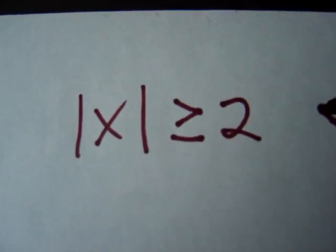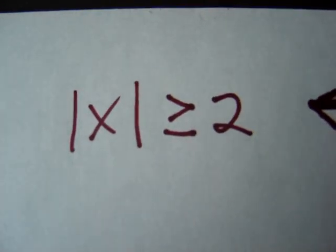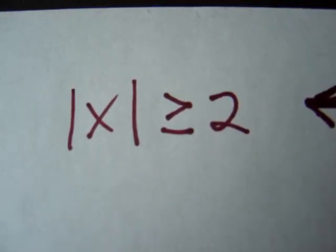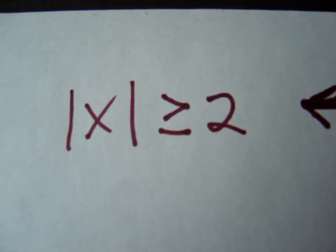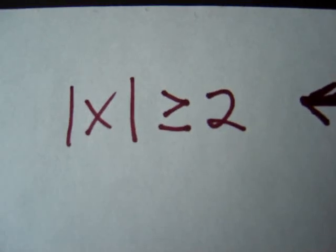Here's a quick video recap of the inequalities involving absolute value. The absolute value of x is greater than or equal to 2 means that the distance from 0 is greater than or equal to 2.